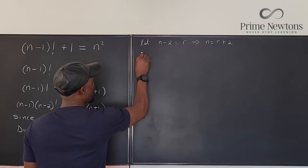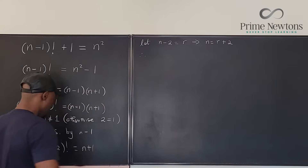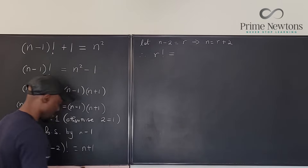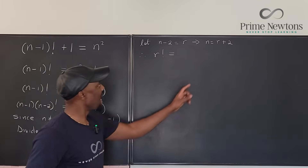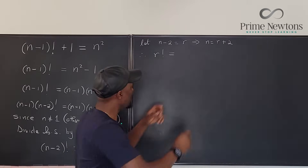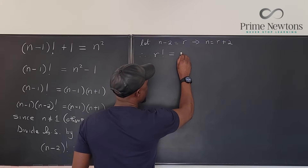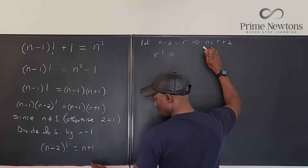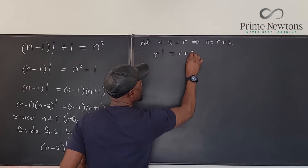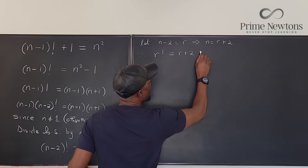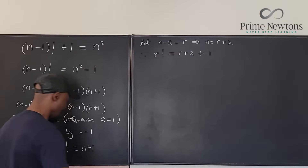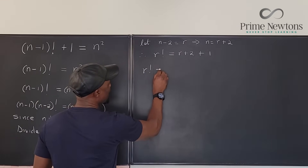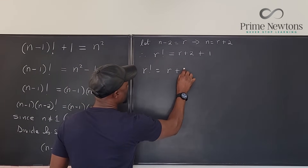With that substitution, (n-2) factorial becomes r factorial on the left. On the right, n+1 becomes (r+2)+1 which is r+3. So we now have r factorial equals r+3.